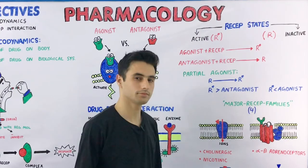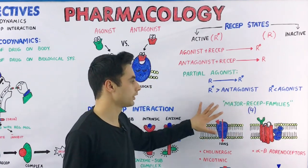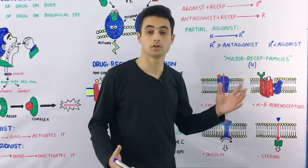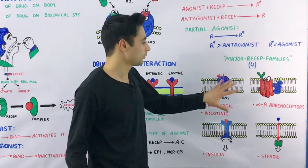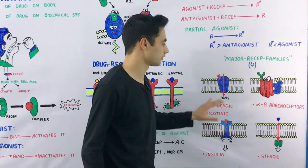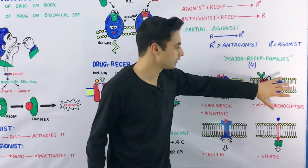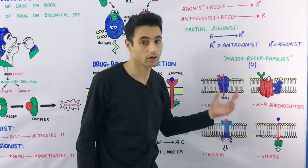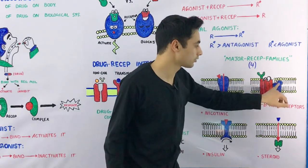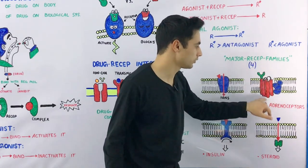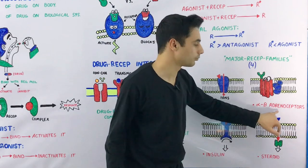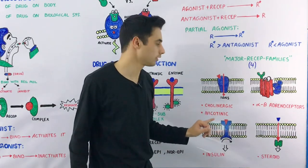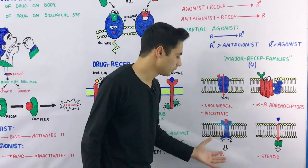Now let's talk about the four major types of receptor families. Some receptors are associated with the ion channel — the drug binds with these receptors, which are majorly present on the surface of cell membranes, and they will open or close the ion channel; these are ion channel-linked receptors. Some have activity associated with the G protein — these are the transmembrane receptors, and examples include the alpha and beta adrenoceptors. Examples of ion channel-linked receptors include the cholinergic and nicotinic receptors.